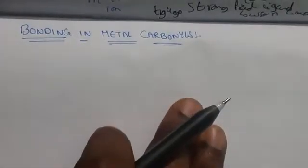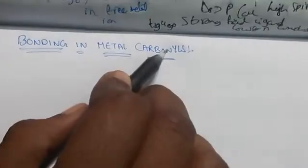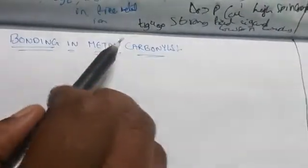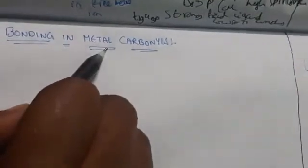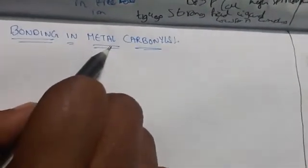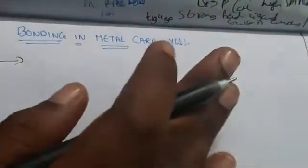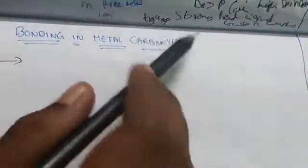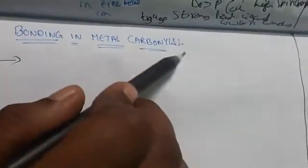Hello students. In the previous class we discussed about crystal field splitting. Today I'm going to discuss bonding in metal carbonyls. Generally, when a metal is bonded to a carbonyl group, or a carbonyl group is bonded to a metal, we call it a metal carbonyl. The ligands consist of only carbonyl groups.